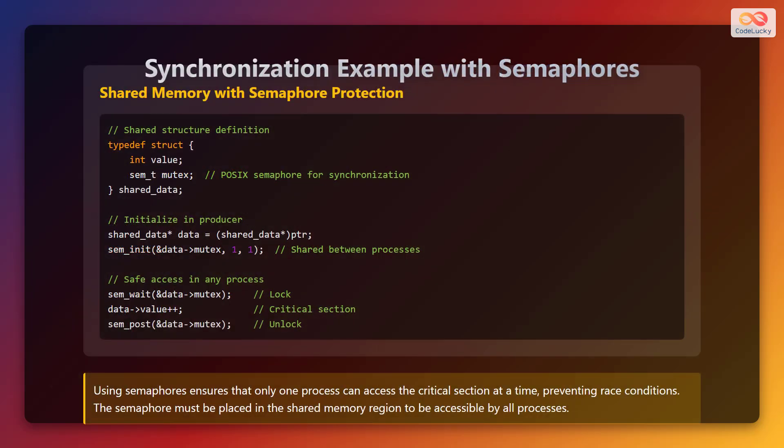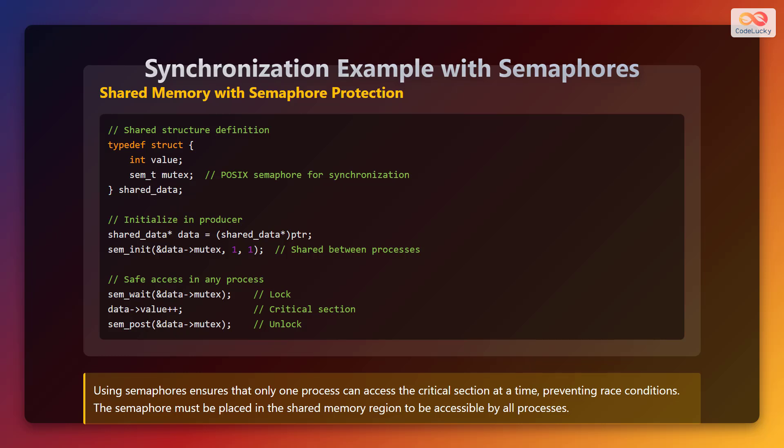Synchronization example with semaphores. Here is an example of shared memory with semaphore protection. First, we define a shared structure containing a value and a semaphore — a POSIX semaphore for synchronization. On the producer side, we initialize the semaphore to be shared between processes. To safely access the shared data, first lock the semaphore using the sem_wait function, increment the value in the critical section, then unlock the semaphore using the sem_post function. Using semaphores ensures that only one process can access the critical section at a time, preventing race conditions. The semaphore must be placed in the shared memory region to be accessible by all processes.